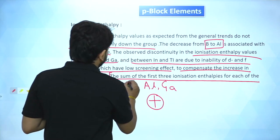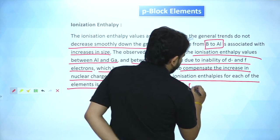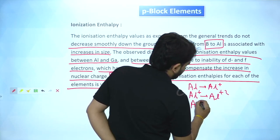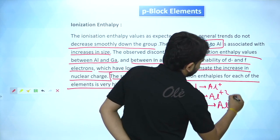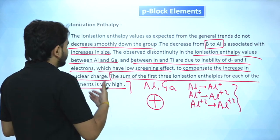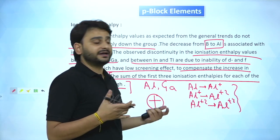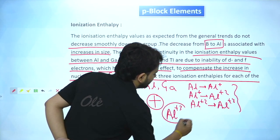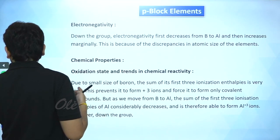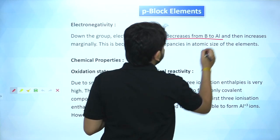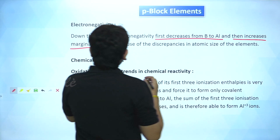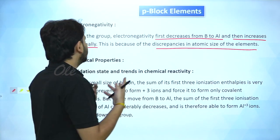The sum of the first three ionization enthalpies for each of these elements is very high — forming Al³⁺ requires a lot of energy, but it does form since sufficient energy is supplied and it achieves a noble gas configuration. Regarding electronegativity, it first decreases from boron to aluminium and then increases marginally going down the group, due to the discrepancies in atomic size we've discussed.